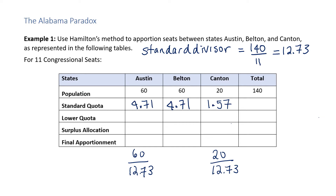Hamilton's method: we take the lower quota for each of the areas. Austin has 4, Belton has 4, and Canton has 1. Add up all of those seats, and that's 9. With 11 seats, we have 2 unaccounted-for legislative seats. We divvy those up to the states with the highest fractional portion, and this time it turns out to be Austin and Belton. The final apportionment with 11 congressional seats: Austin gets 5, Belton gets 5, and Canton gets 1. So with 1 more congressional seat, Canton has less overall — Canton lost a seat.